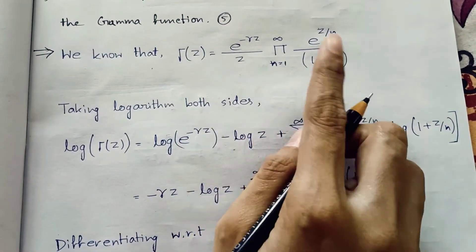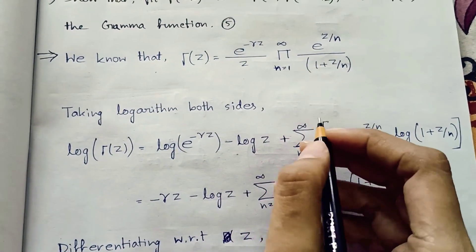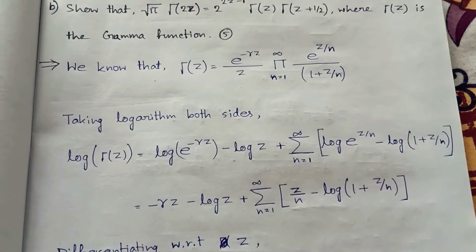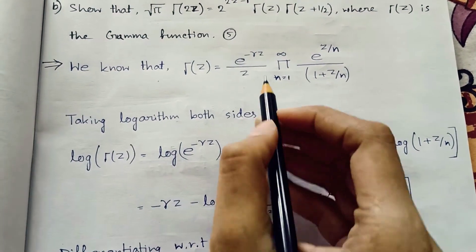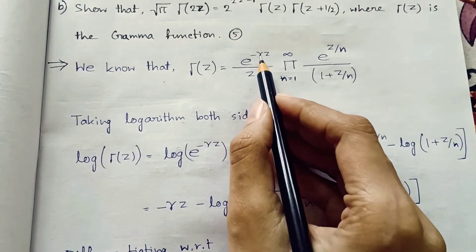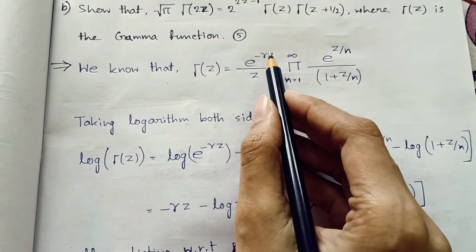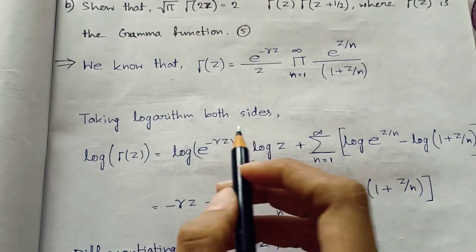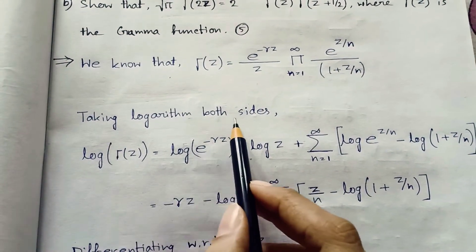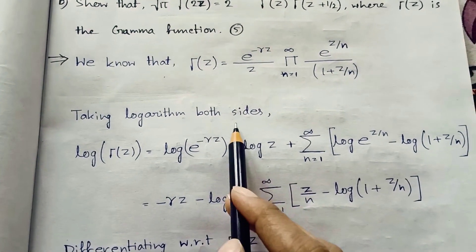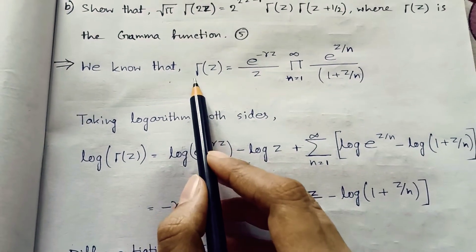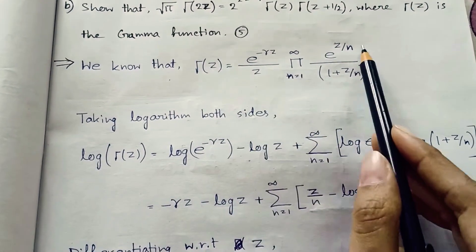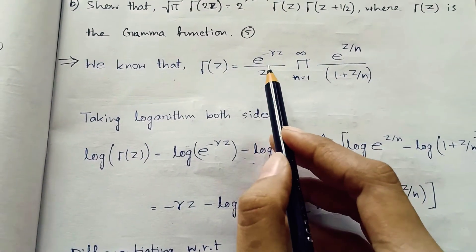Since gamma(z) is defined as this infinite product, we are going to take the log of both sides. Before that, let me introduce Euler's constant γ. After taking log of both sides, the left side becomes log of gamma(z).